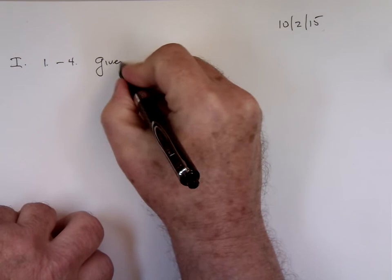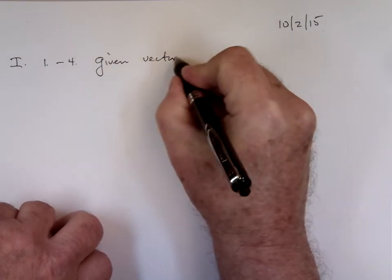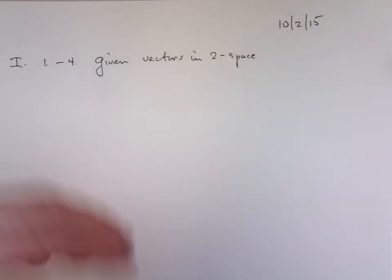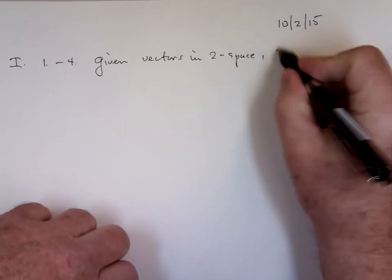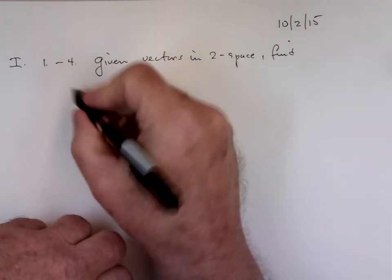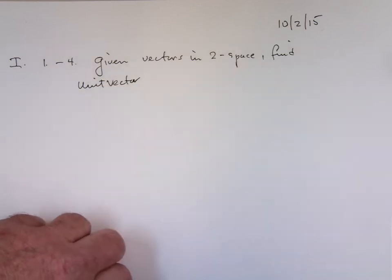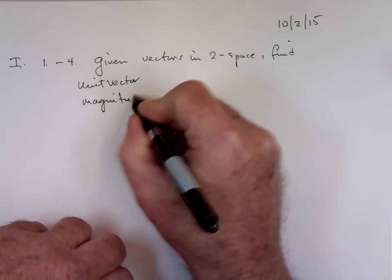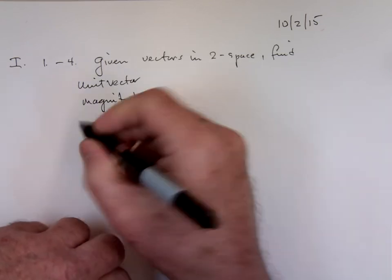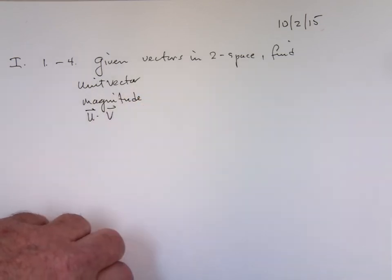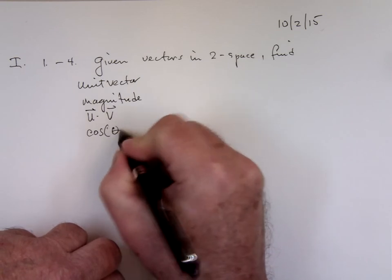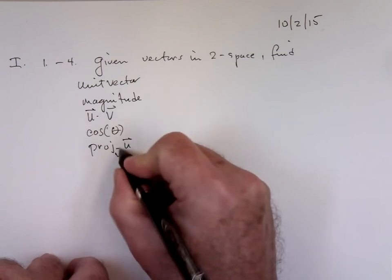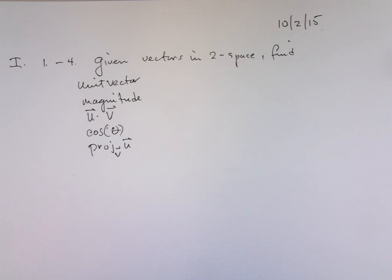I'm going to be giving you vectors in two space. And I'm going to ask questions like find unit vector - take a vector divided by its magnitude. I will ask for the magnitude. I will ask for a dot product. I would ask for the cosine of the angle. I would certainly ask for the projection of one vector on another. That's something that's pretty important. We're going to need that later on. Those are the kinds of things I'm going to be asking you for.